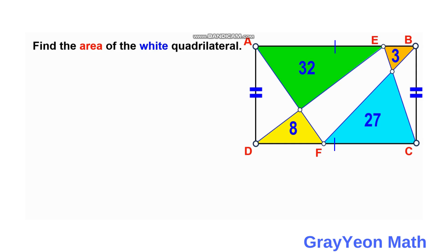The first thing we can do is draw a line from E to F — a straight line connecting these two points.